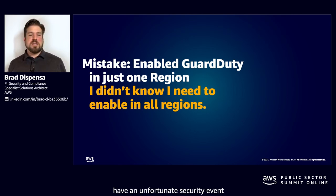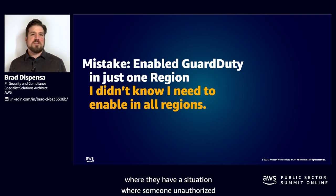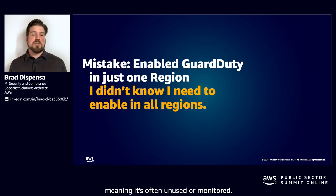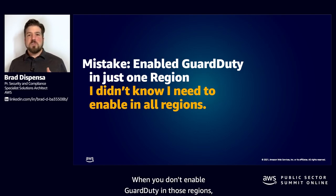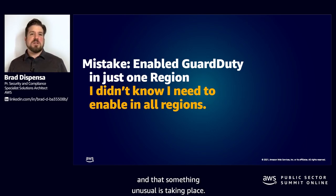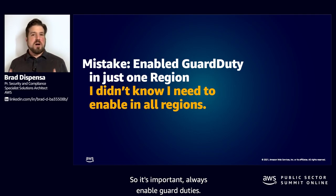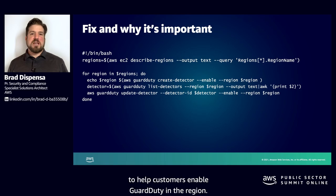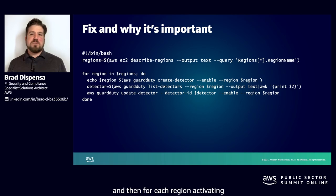Sometimes when customers have an unfortunate security event where someone unauthorized is in their account, the adversary will look for where the majority of resources exist, and then go to use a region that has no resources — meaning it's often unused and unmonitored. When you don't enable GuardDuty in those regions, you don't get notifications to know that an anomaly has occurred and something unusual is taking place. Always enable GuardDuty everywhere. I've provided a simple shell script that goes through all AWS regions and for each region activates the GuardDuty detector.